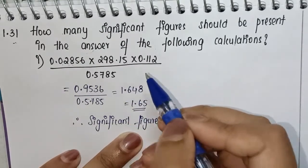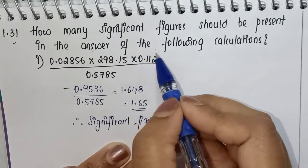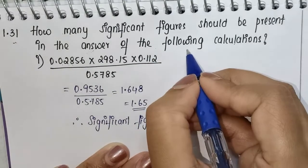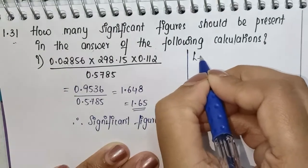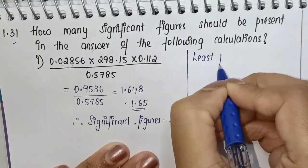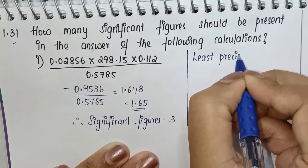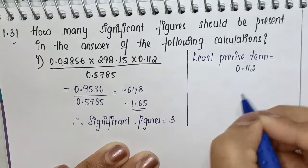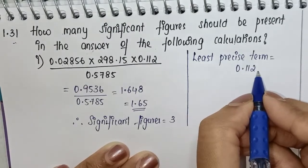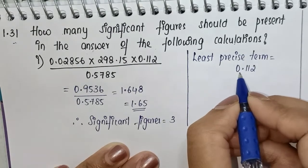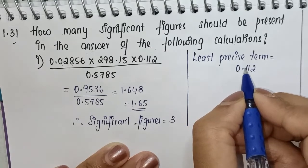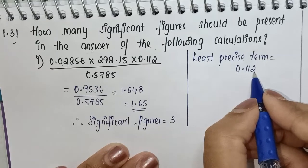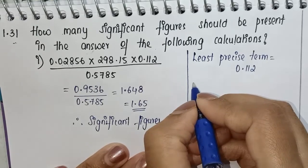This is by simple calculation method. The other one is to find out which is the least precise term. In this question, the least precise term is 0.112. If you check this number, it has only three significant figures because the zero before the decimal is not significant as per the rule.